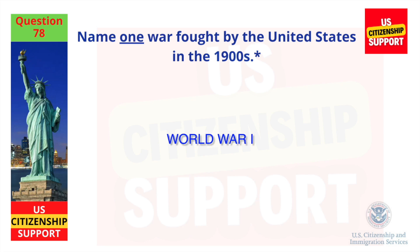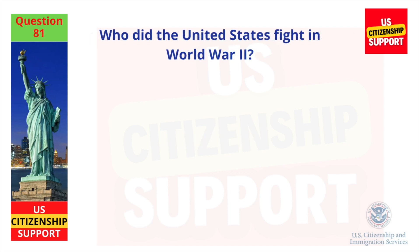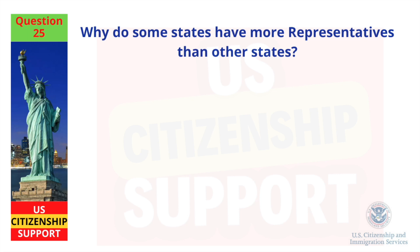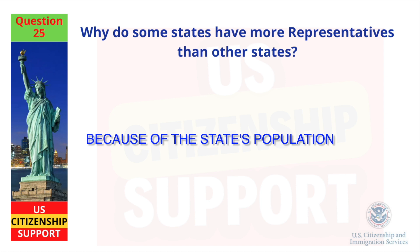Name one war fought by the United States in the 1900s. World War I. Who did the United States fight in World War II? Japan, Germany, and Italy. Why do some states have more representatives than other states? Because of the state's population.